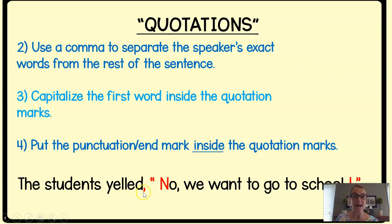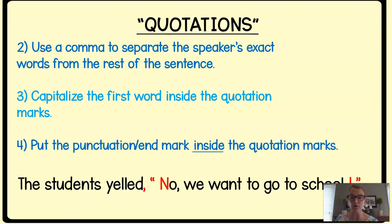Let's look at this sentence to model rules two, three, and four: 'The student yelled, No, we want to go to school.' We put a comma after the word 'yelled' because it separates the exact words the speaker said from the rest of the sentence. Then we put a capital for the beginning of what the person said: 'No, we want to go to school.' The punctuation mark is an exclamation point and it goes inside the quotation marks. So: comma, quotation mark, capital, punctuation mark, quotation mark. That's a lot to remember, so we're going to do a lot of practice together.